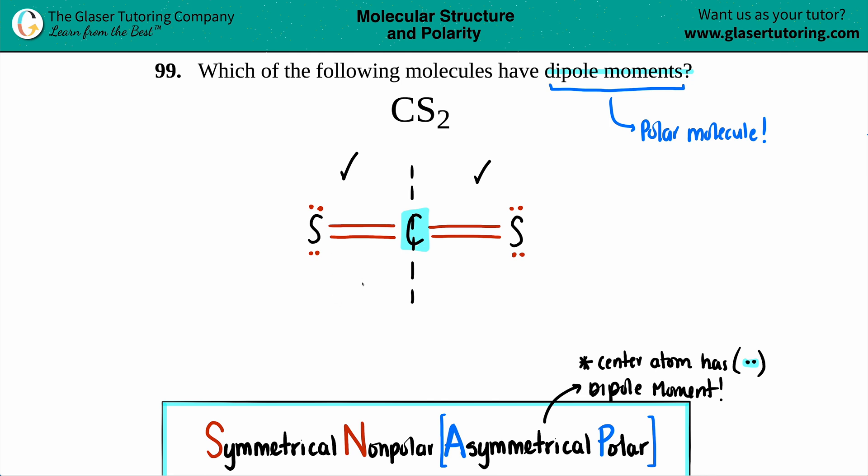So this is completely symmetrical. If you have symmetry, you are identical on one side and the other, and your center atom does not have any lone pairs. Since it's symmetrical, we know that this is nonpolar.